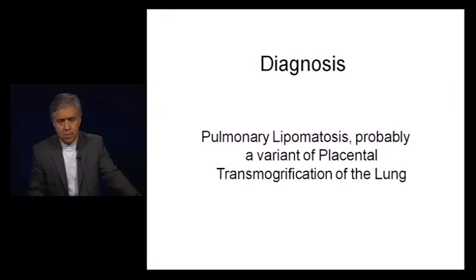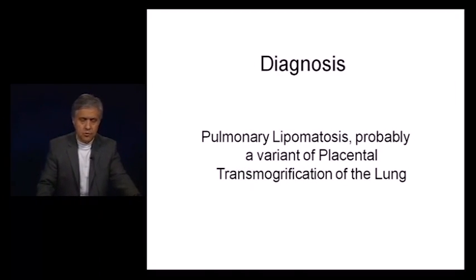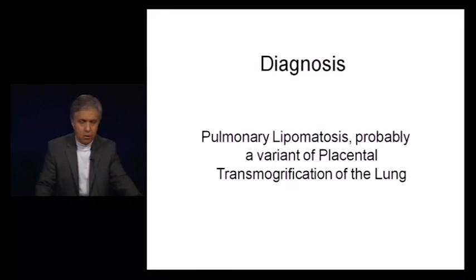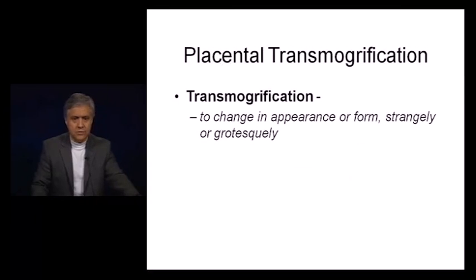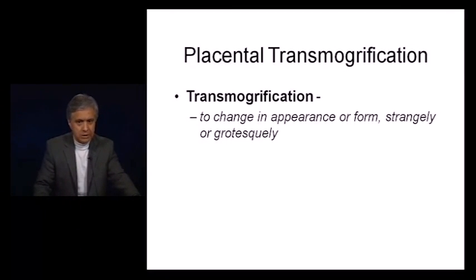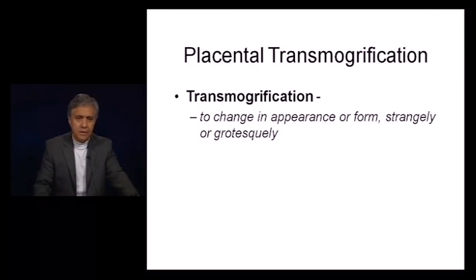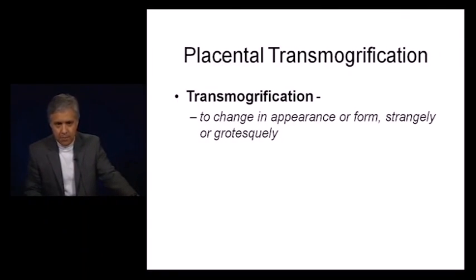This is the so-called pulmonary lipomatosis, which probably represents a variant of what is called placental transmogrification of the lung. Transmogrification — some of you may think this a completely new entity, and yes, it is unusual, but it is not as rare as we think. From the English dictionary, transmogrification means to change in appearance or form strangely or grotesquely, which is exactly what happened with that lung.